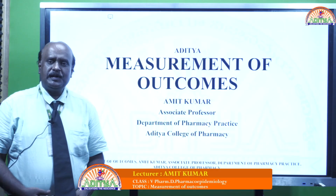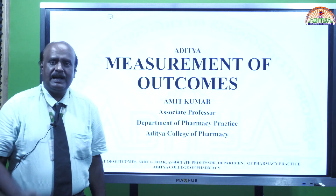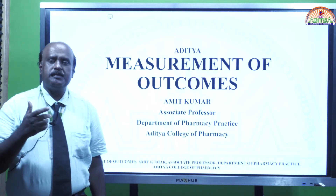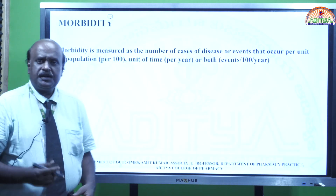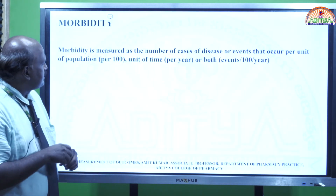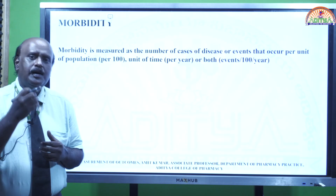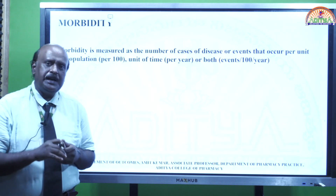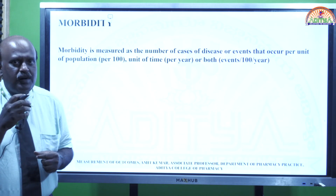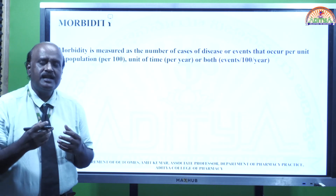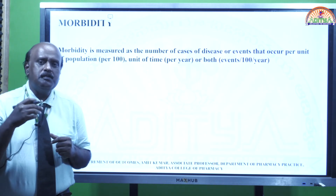Welcome once again to the class on measurement of outcomes. In the last class, I discussed about measurement of mortality rates. Now in this video, I will discuss about measurement of morbidity. Morbidity basically means the number of cases of disease or events in a population per unit time. If you take population as per hundred and time as per year, morbidity becomes events per hundred per year.